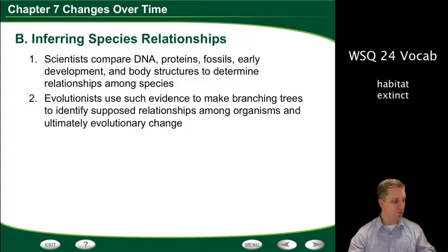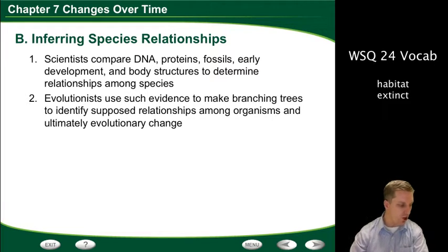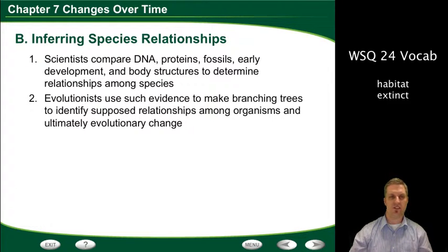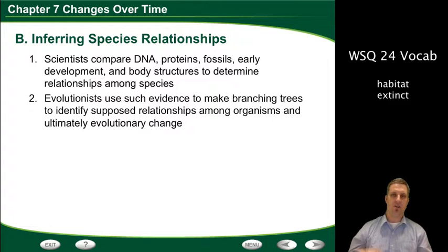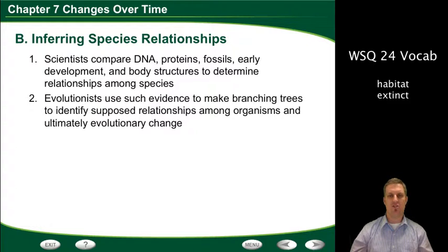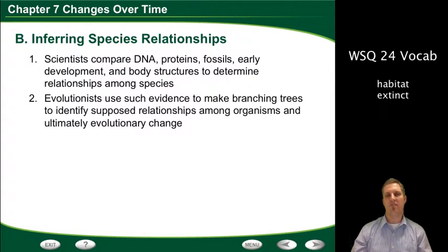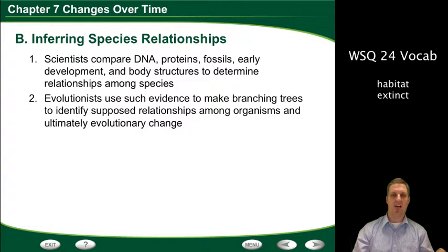Scientists will also take closely related species and infer relationships between them and distant species. They'll compare DNA, proteins, fossils, early development, and body structures — all those things we talked about in WSQ23 — to determine the relationships among species. Evolutionists take such evidence to make a branching tree diagram to identify the supposed relationships among organisms and ultimately the evolutionary change. They're basically guessing what they think happened.